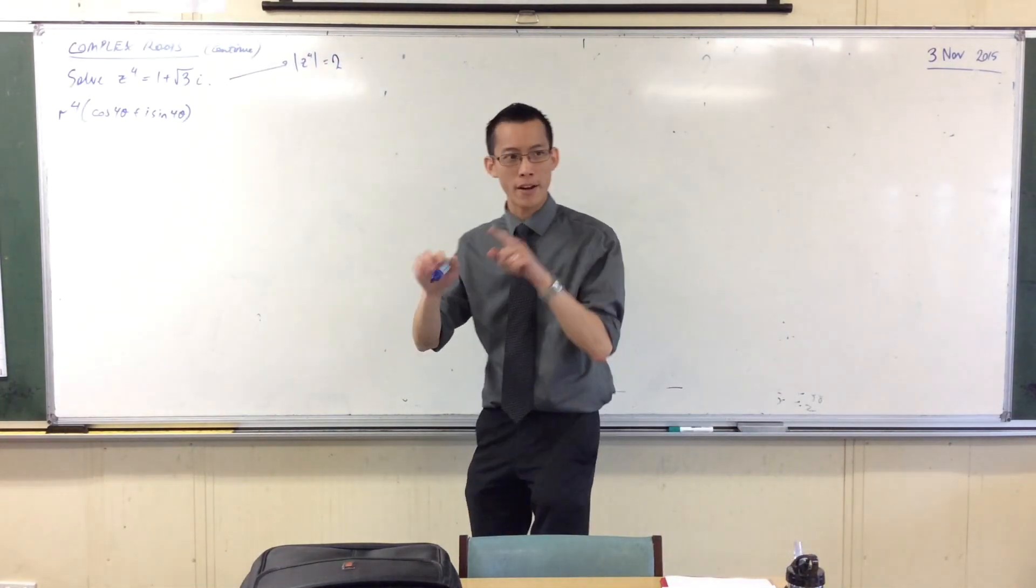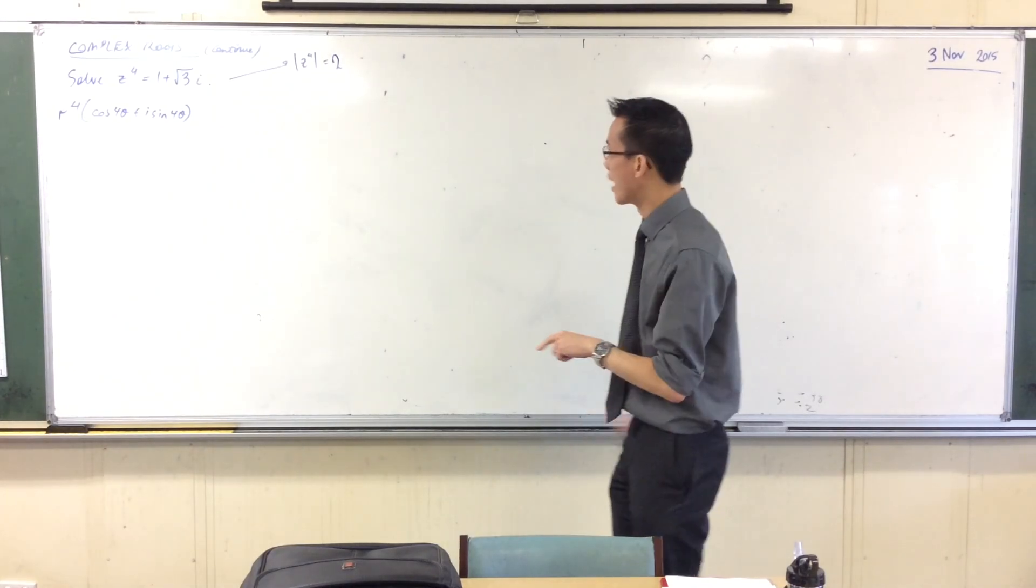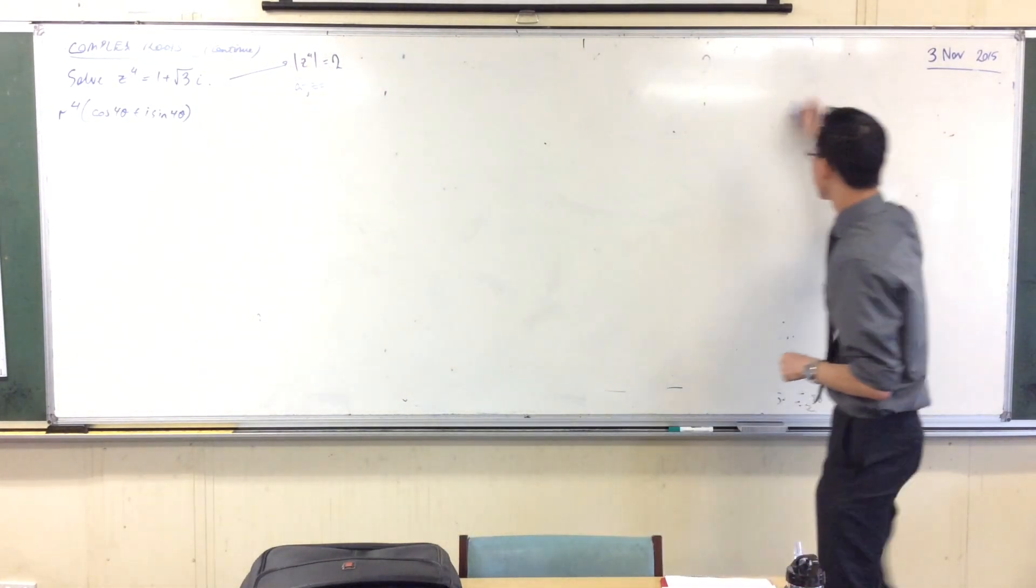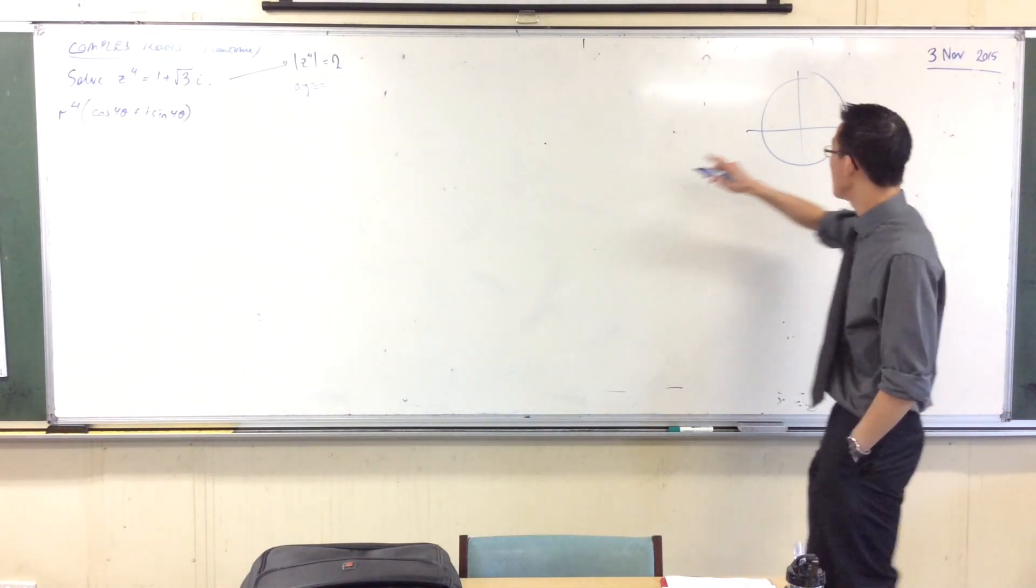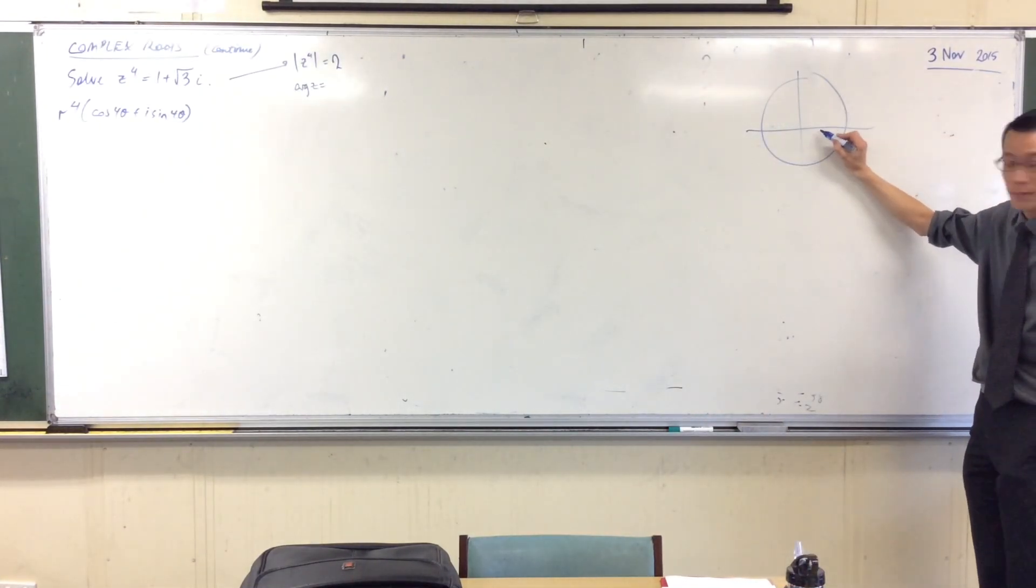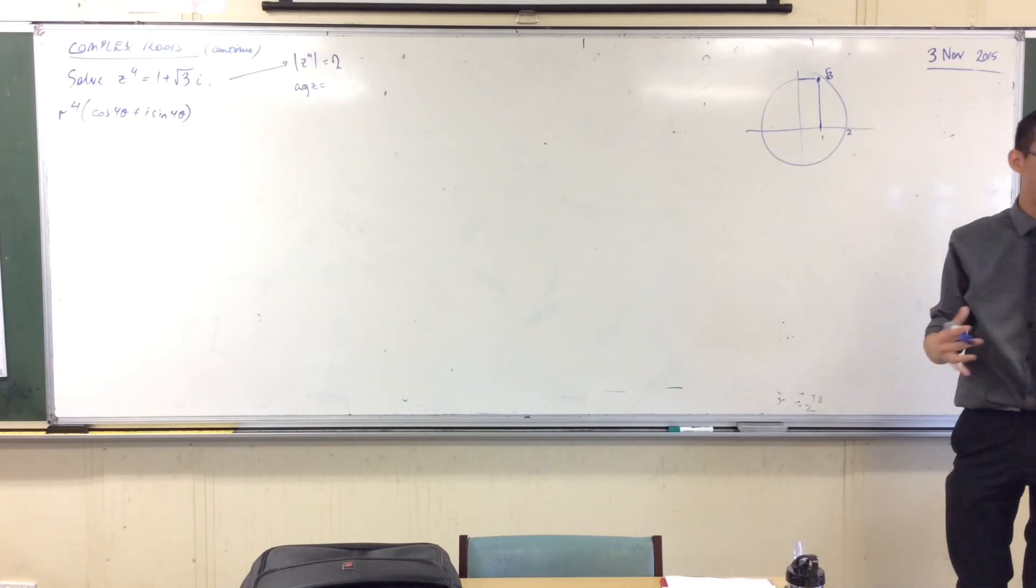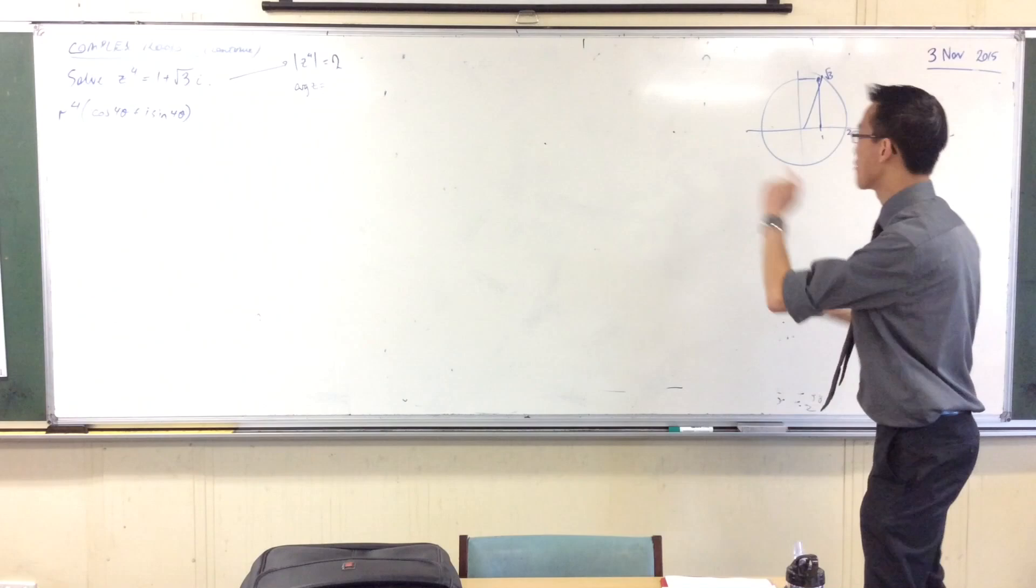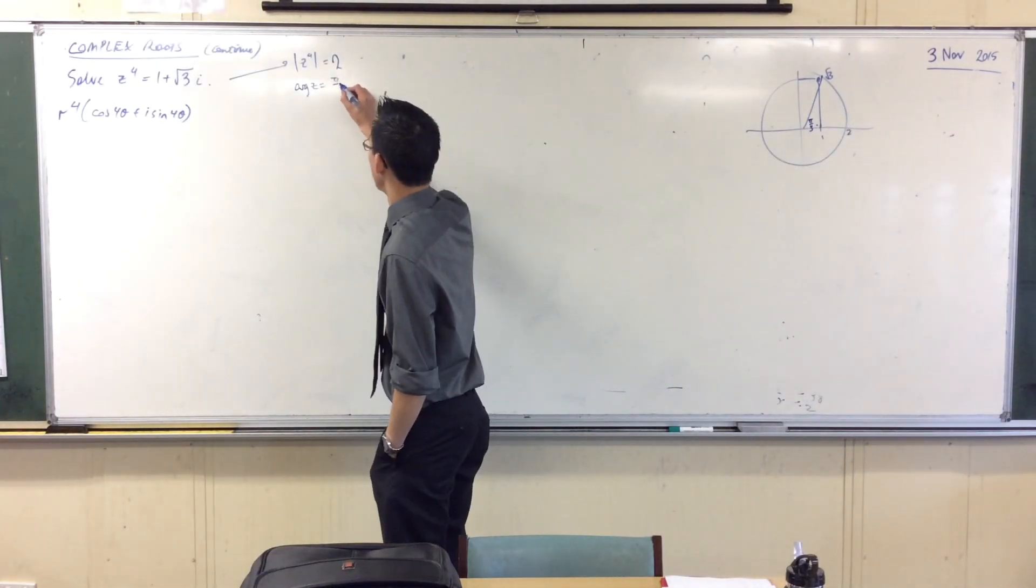If you think about where it is, 1 and then plus root 3 i, I wonder if you can picture what angle you're going to get for arg z. Do you want me to draw a diagram for you? It's radius 2. I've gone across 1, there's 1 because it's a circle of radius 2, and then I go up to root 3. So clearly, because we know this is an exact angle, the one that's going to work is 60 degrees, which is pi on 3 radians. So that's what arg z is, the principal argument.